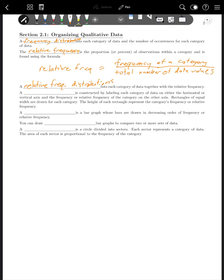So you take the frequency of a particular category and you divide it by the total number of data values altogether. A relative frequency distribution lists each category of data together with its relative frequency. So instead of listing the total numbers, we list the proportion or percentage that fall in that category.